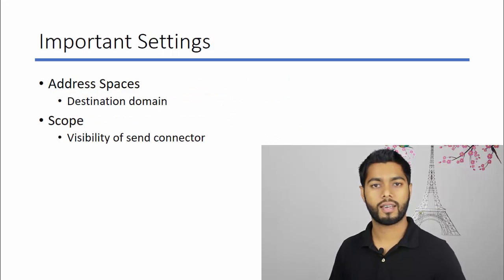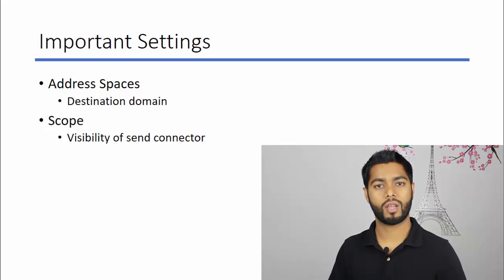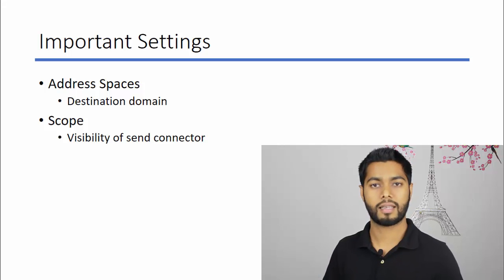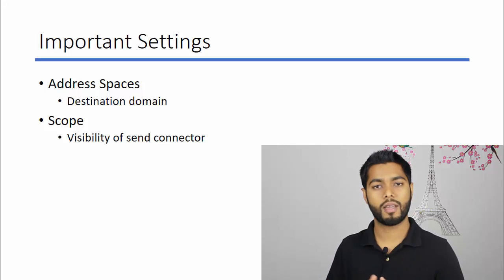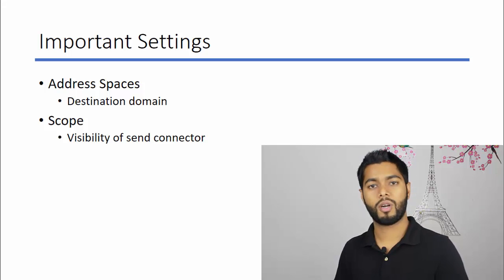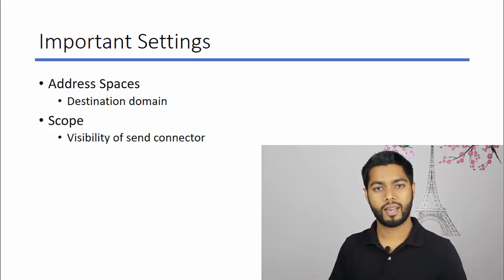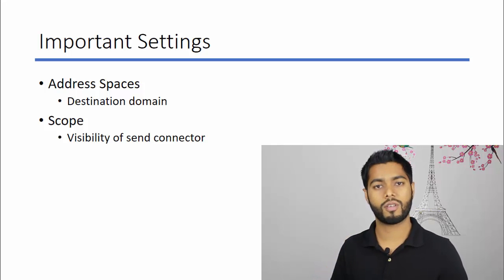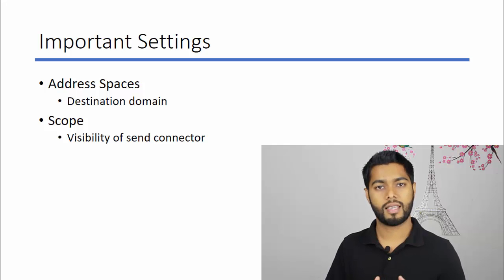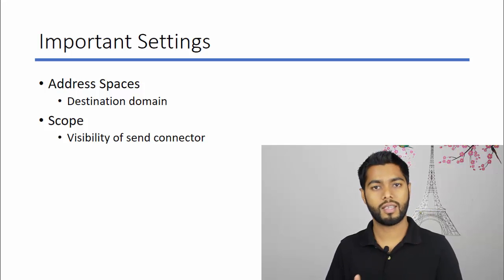There are two important settings to notice when you configure a Send Connector. The first is Address Space. Address Space gives you an option to create a Send Connector for a group of recipient domains. So if you have some recipient domains that need to be sent through a particular SMTP gateway, you can create a Send Connector and in Address Space you mention that group of recipient domains. When you send an email to that domain, the transport service will choose this Send Connector.